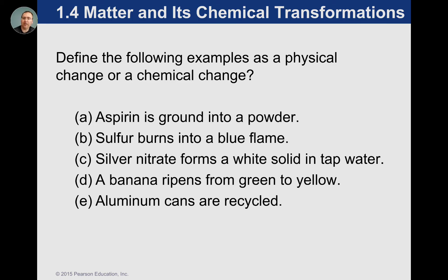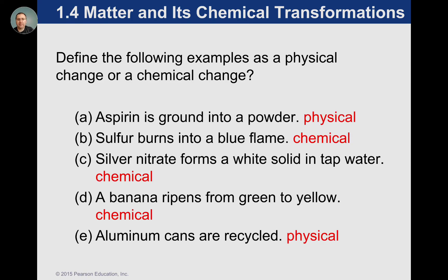Anytime we make a new compound with a new color — silver nitrate is clear, but if it produces something white, it's made something new — that's a chemical change. When a banana ripens and changes color, that's a chemical change. Color change, production of a gas, production of a precipitate, heat, or light are all ways to recognize chemical transformations. Aluminum recycling is physical — you melt an aluminum can and make a new one. A Pepsi can can be melted down and turned into a Coca-Cola can — definitely a physical change.